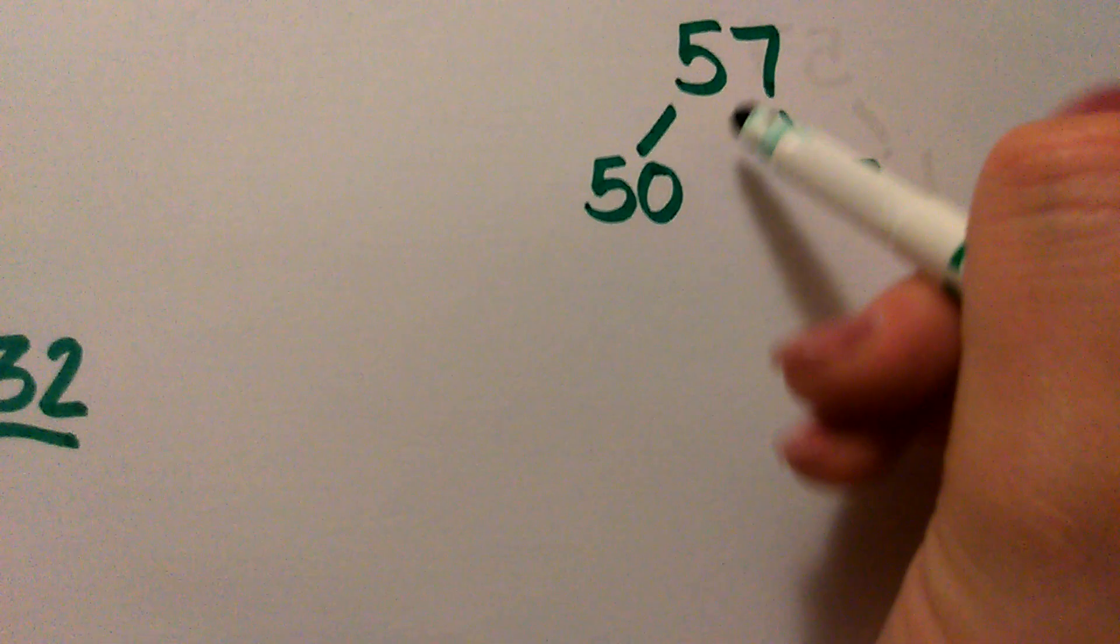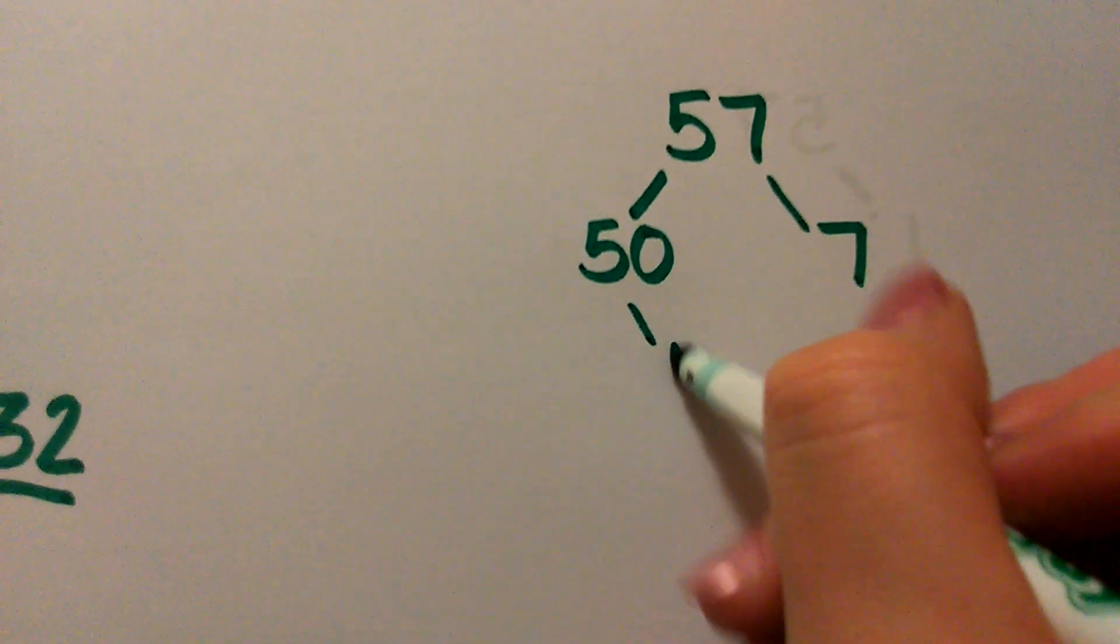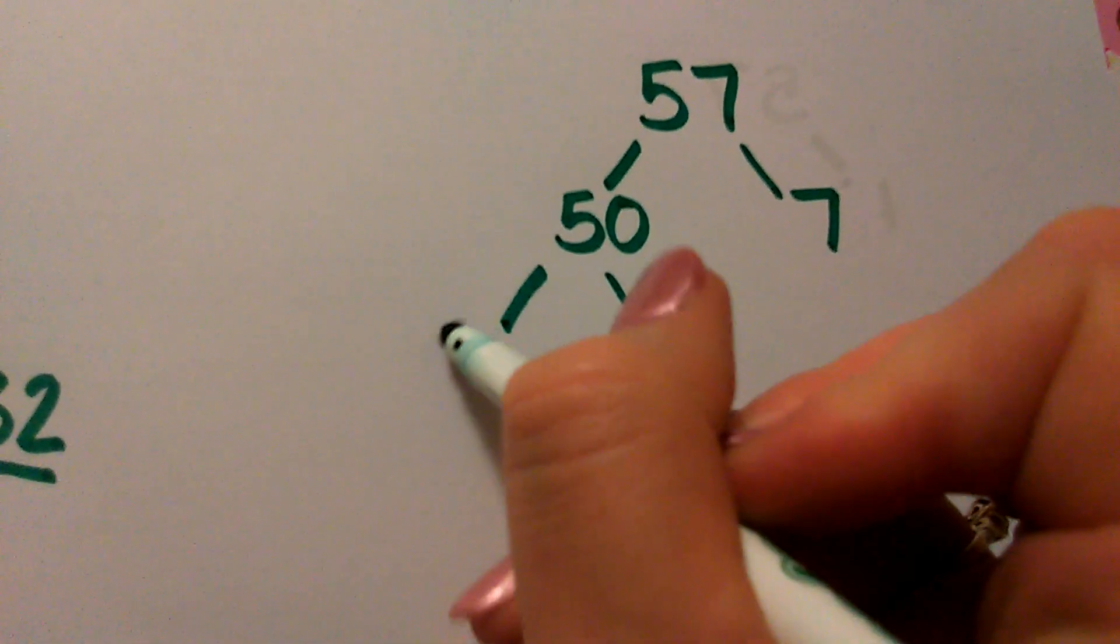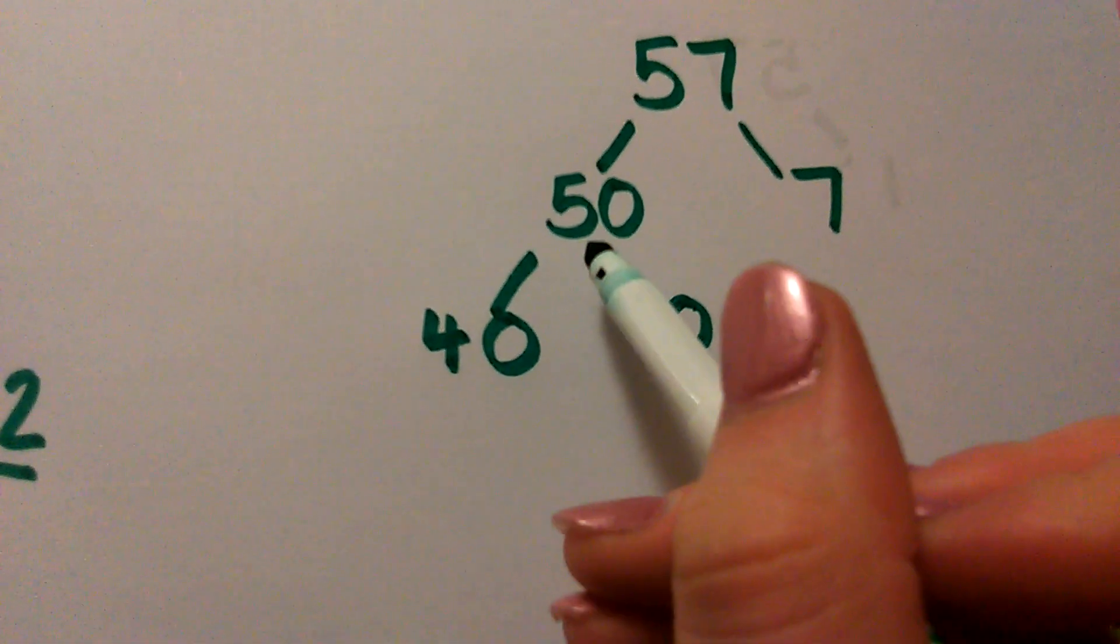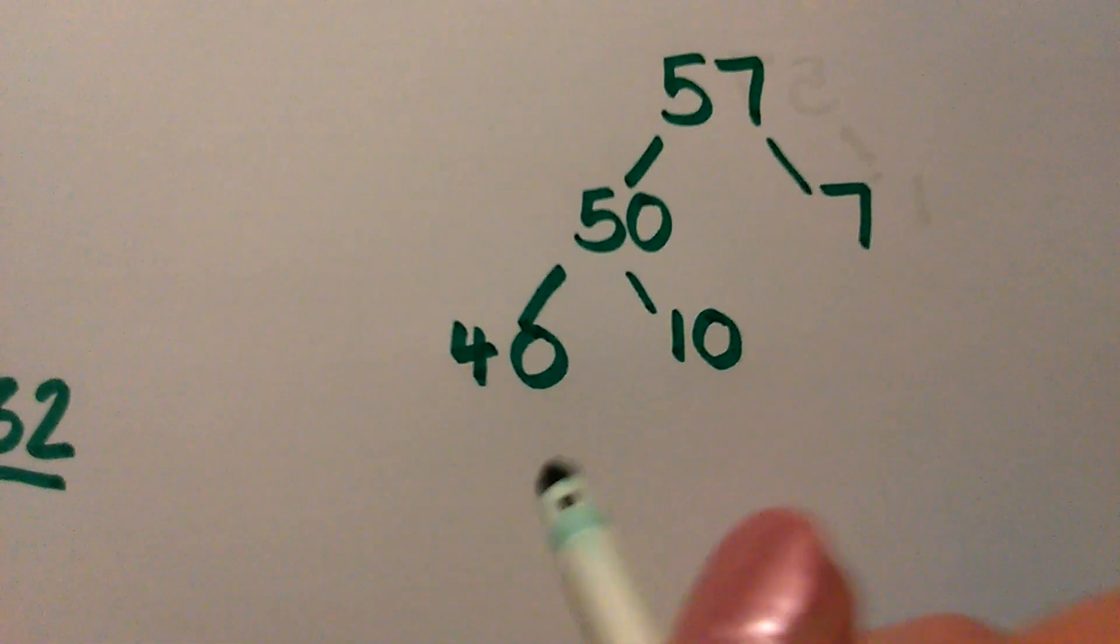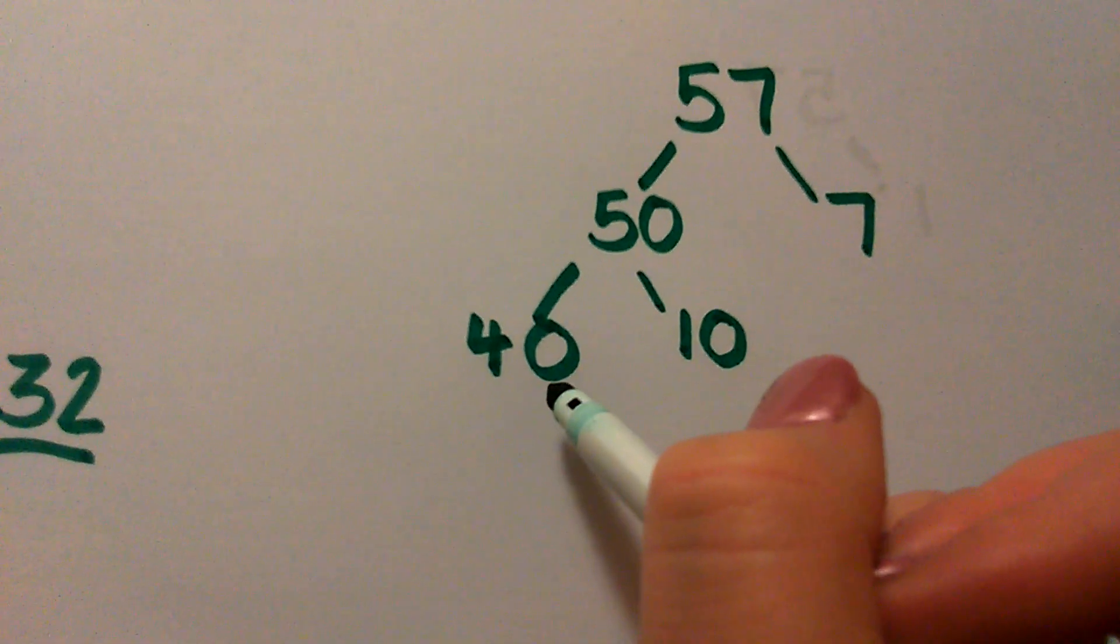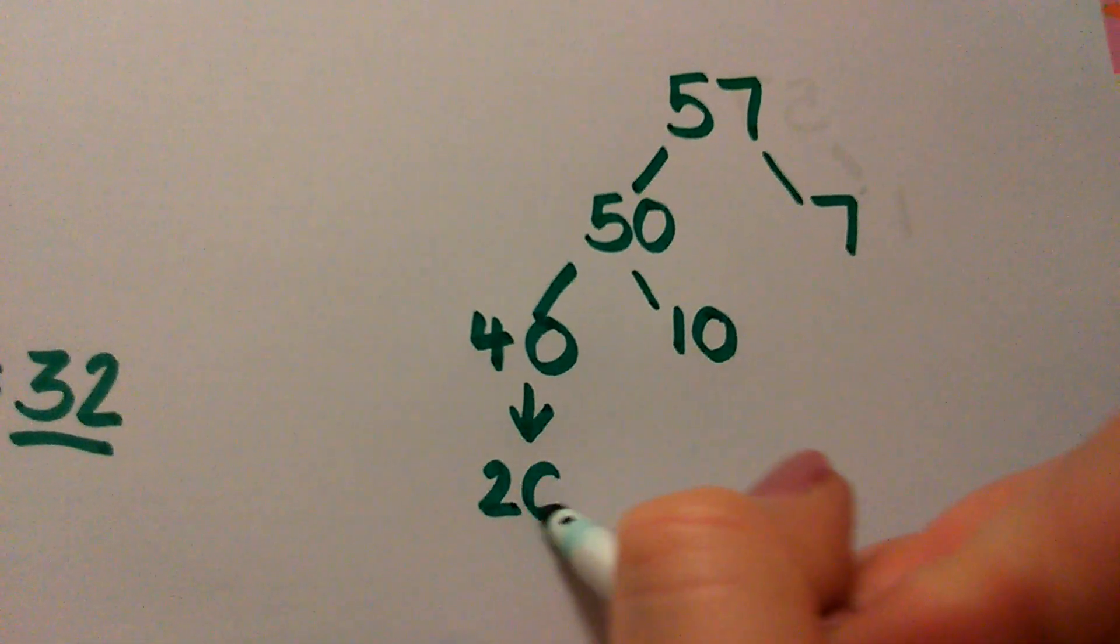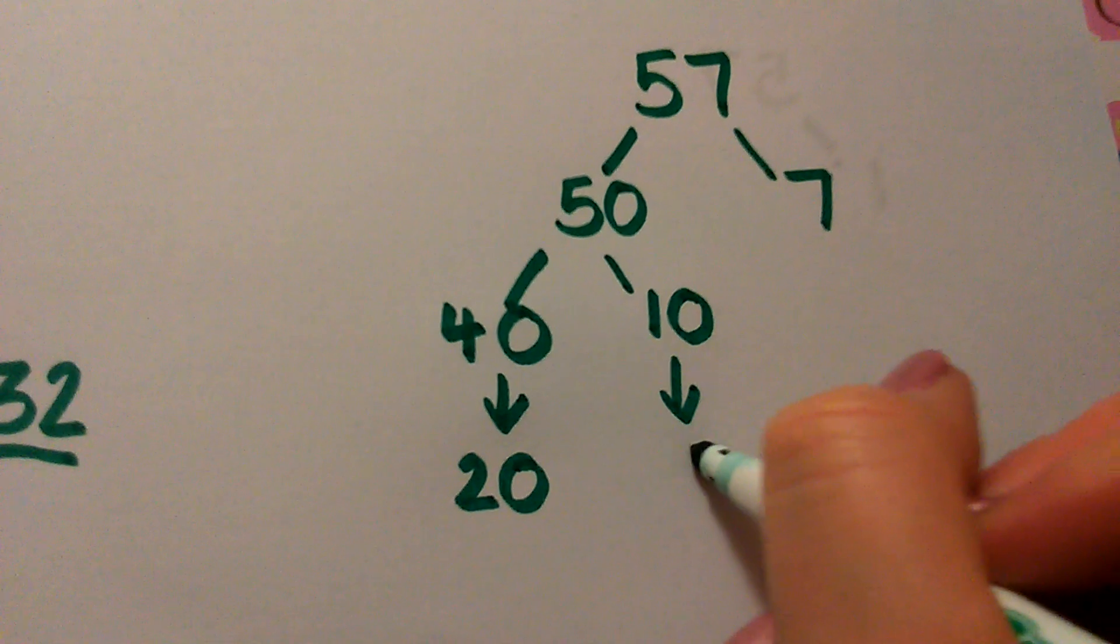So if I'm looking at the tens column, I can partition off 10. 50 with 10 partitioned off leaves us with 40. So 40 and 10 make our 50. And these numbers are much easier to halve in our heads because they're even. So 40 halved is 20. And 10 halved is 5.